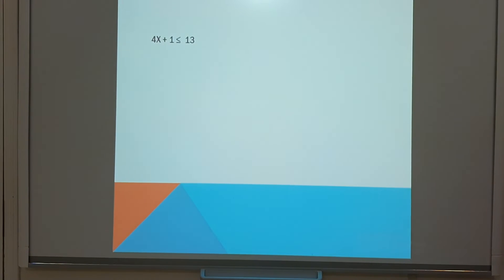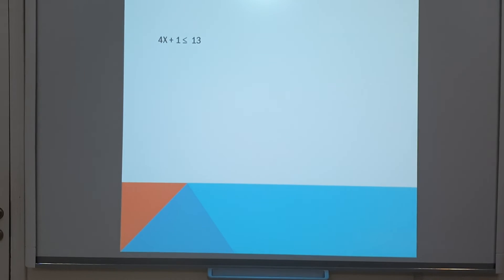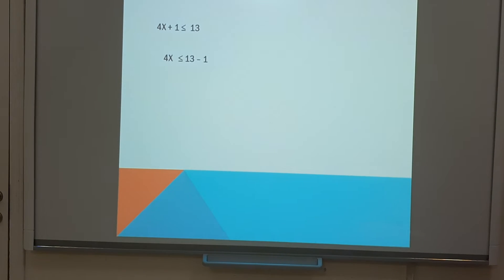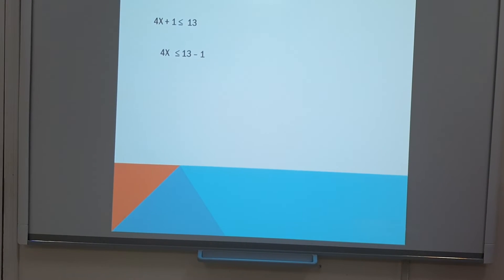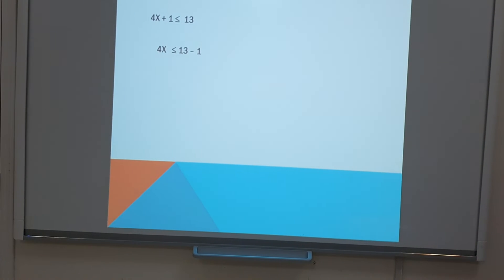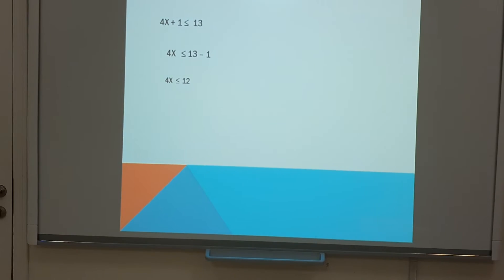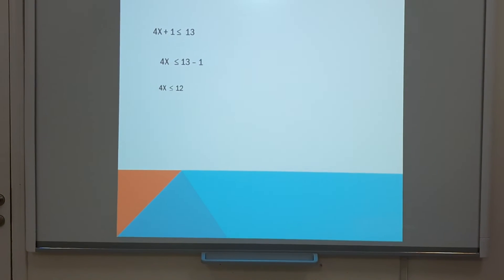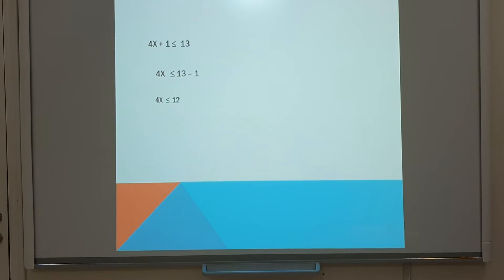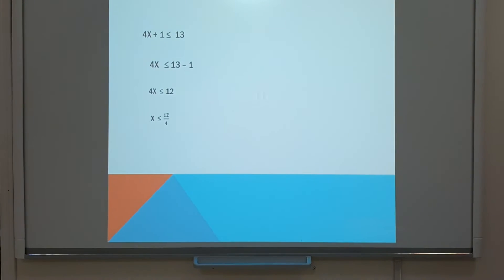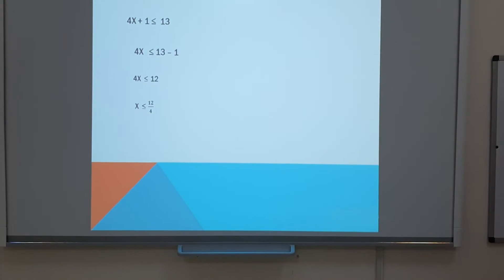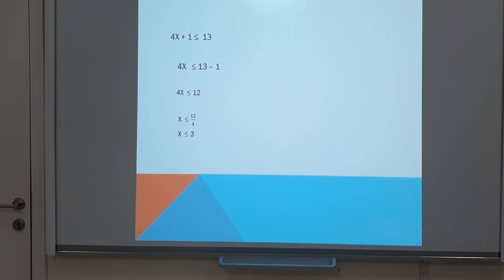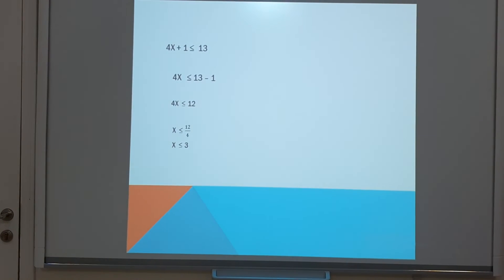Next: 4x plus 1 is less than or equal to 13. Keep the variable, so 4x is less than or equal to 13. That plus 1 becomes minus 1 on the right side: 13 minus 1 is 12. So 4x is less than or equal to 12. Divide both sides by 4: x is less than or equal to 12 divided by 4, which is 3. So x is less than or equal to 3.